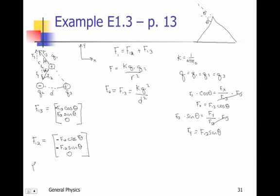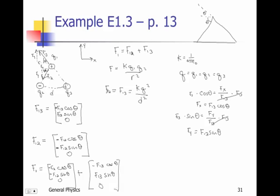So now if I want to find f1, I'm going to add these vectors together. So f1,2 first: negative f1,2 cosine theta, negative f1,2 sine theta, and 0, plus negative f1,3 cosine theta and positive f1,3 sine theta. Now I know that my f1,2 and my f1,3 — those numbers — are equal to each other. Say they're both 10. If my thetas are the same, then my y component here is the same as my y component here.